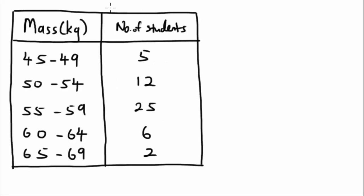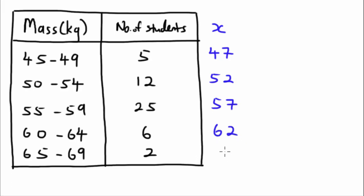The highest class is 65 to 69, so we find its midpoint, and the midpoint of the lowest class 45 to 49. The midpoint x is calculated by adding the lower and upper values and dividing by 2. So 45 plus 49 divided by 2 gives 47, and continuing we get midpoints: 47, 52, 57, 62, and 67.